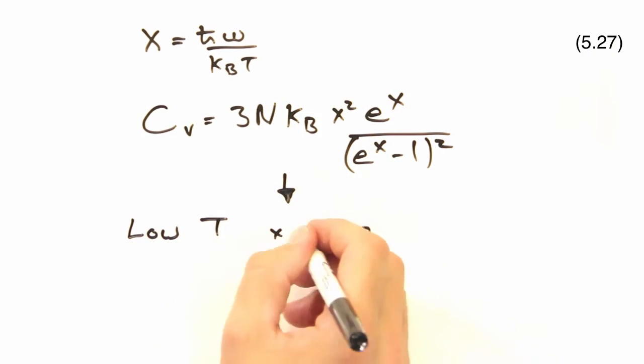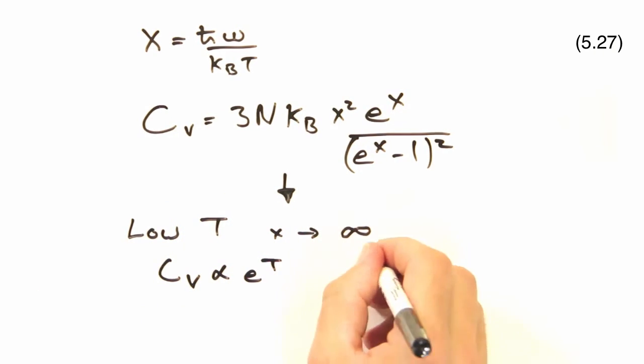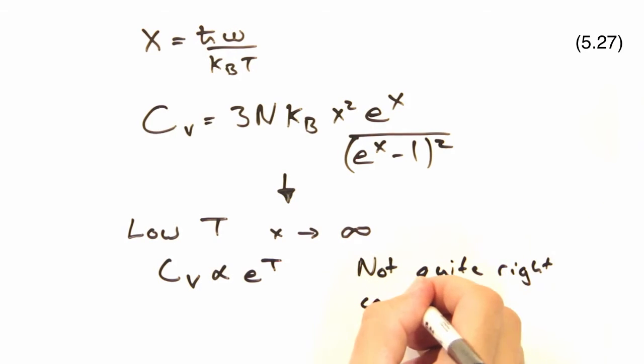When we look at low temperatures, our heat capacity has an exponential dependence on T. In practice, we see actually a T cubed dependence experimentally. So while we're getting a reduced heat capacity, like we generally expect, the temperature dependence is wrong. And next time we'll look into the nitty-gritty of why this is wrong.